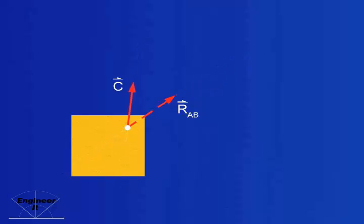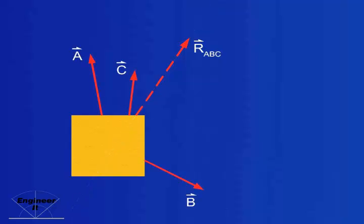Using the parallelogram method again, we can find their resultant vector. It can be moved along its line of action to any point, most conveniently to the edge of the box. This vector is the resultant of vectors A, B, and C combined.